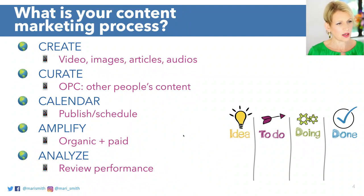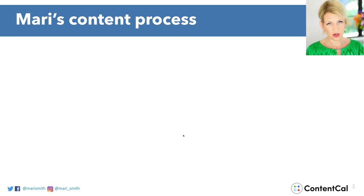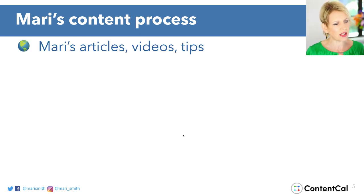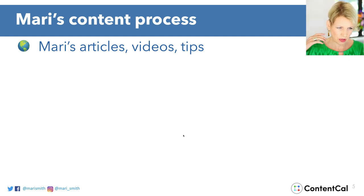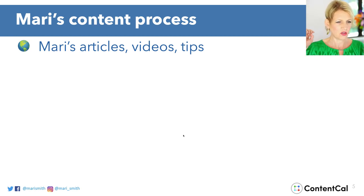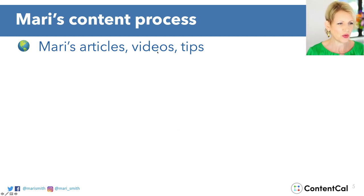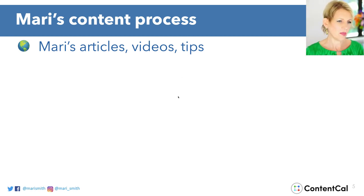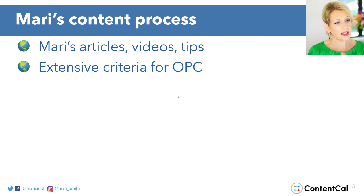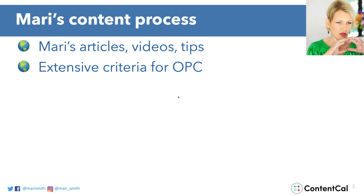Here's my own process, which is similar to what I just showed you. I start out with my owned content — my articles on Bank of America. I don't blog as much as I'd like to on my own blog; that's on my never-ending to-do list. I definitely love creating videos and sharing out tips on Twitter, Facebook, and Instagram — my three main ones. Then I have extensive criteria for OPC, other people's content — a whole blend of topics and sources. I do have help, and this is one of the easiest areas to delegate when bringing on people.